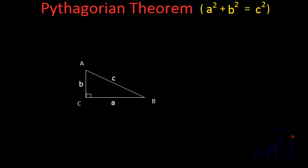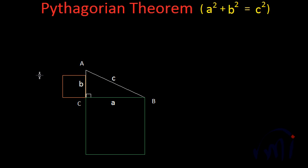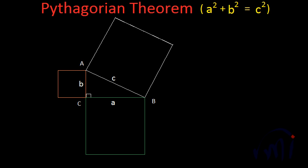A squared is nothing but the area of the square which has one side equal to A. Similarly, B squared is the area of the square which has one side equal to B, and C squared is the area of the square whose each side is equal to length C. So the area of the green square is A squared, the area of the orange square is B squared, and the area of the white square is C squared. If we can prove that the sum of these two areas equals C squared, then the Pythagorean theorem is proved.